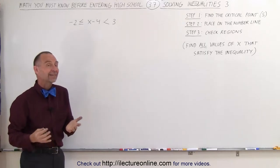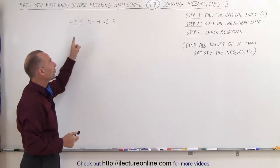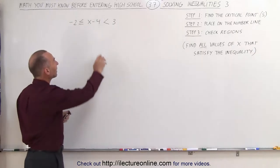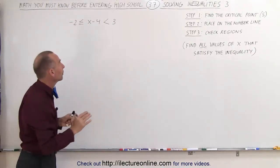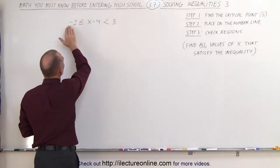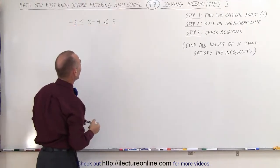We follow the exact same steps, but before we do, we want to simplify this a little bit. We just want the x in the middle. We want to get rid of this negative 4. So what we're going to do is add the 4 to the left, to the middle, and to the right side of this inequality.